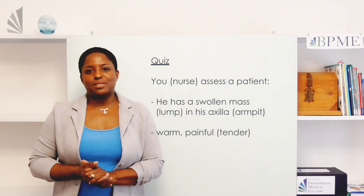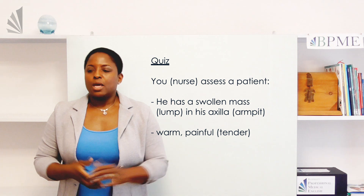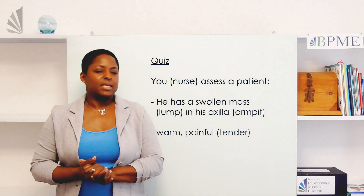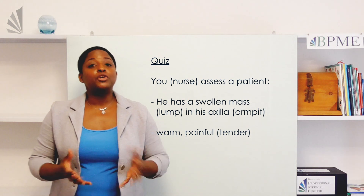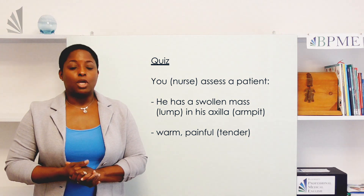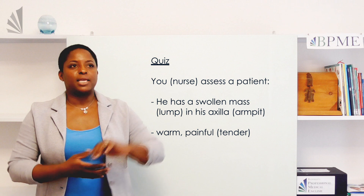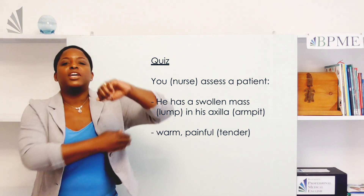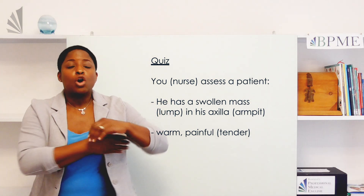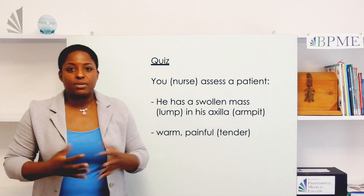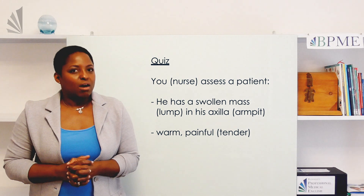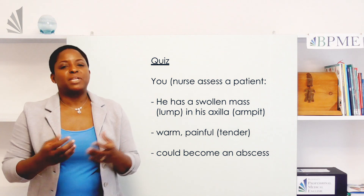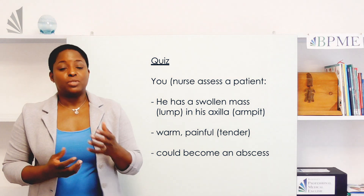So now here's a quiz for you. You have a patient who comes into your general practice. This time you're a nurse — you're the first to assess the patient. You look and you see that the patient has a swollen mass in their armpit, or axilla. It is warm, it is painful or tender, and any longer and it could be an abscess. How do you explain this to the patient using an if clause?